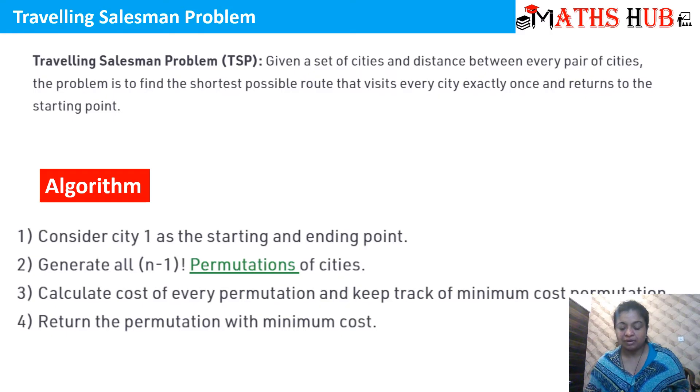Calculate the cost of every permutation and keep track of the minimum cost permutation. Return the permutation which has the minimum cost. It's a very simple algorithm. Let us understand the steps in the following example.